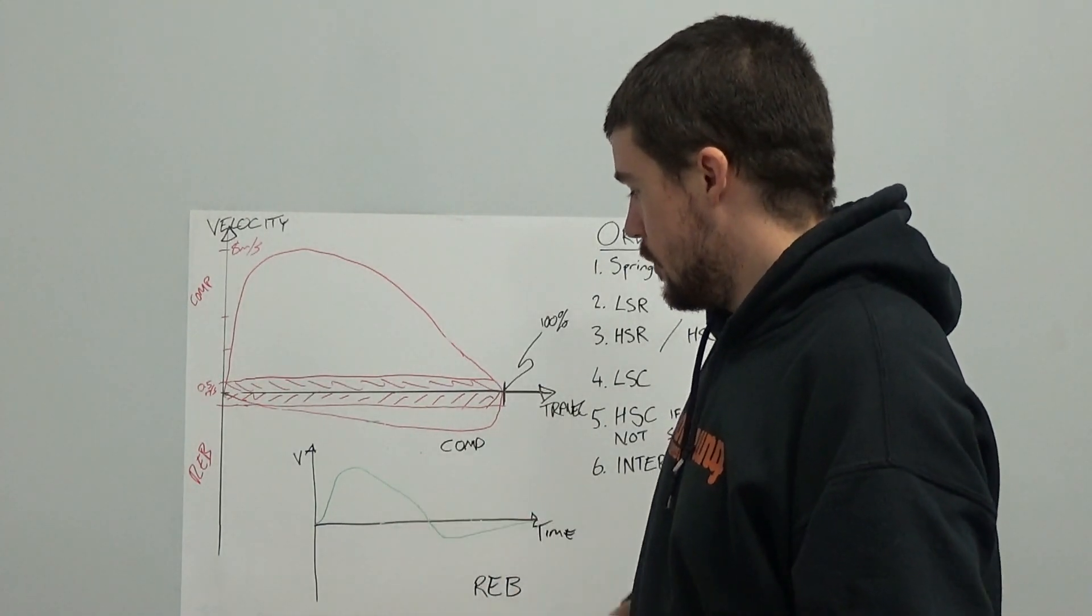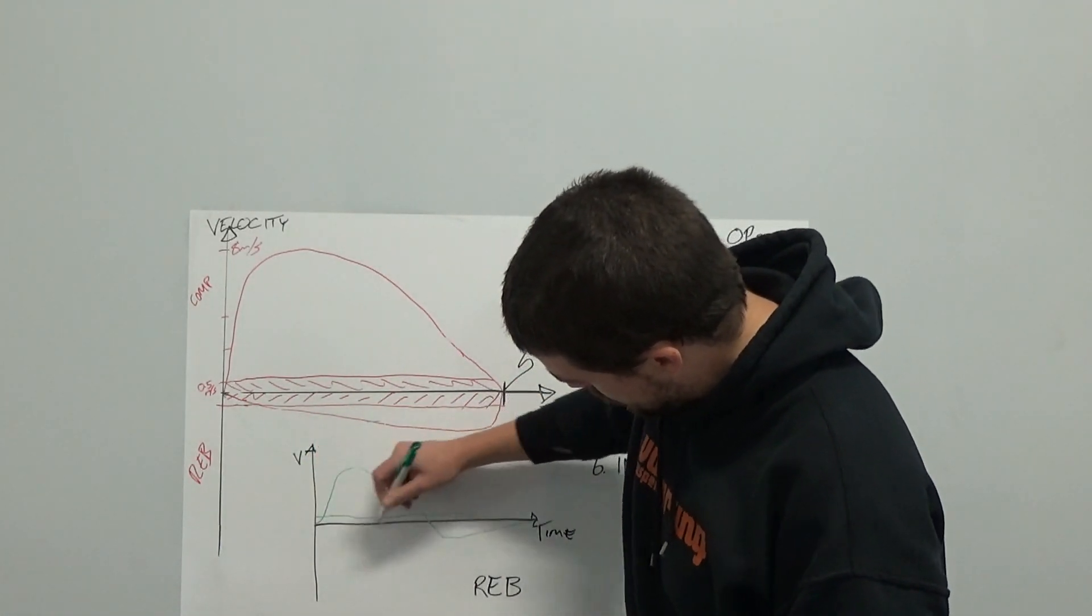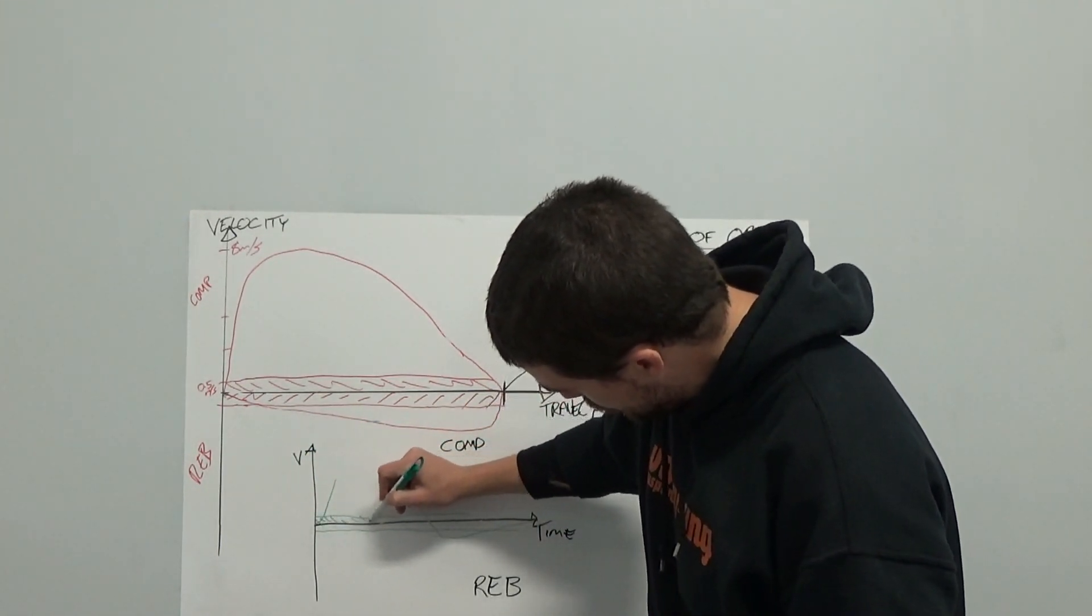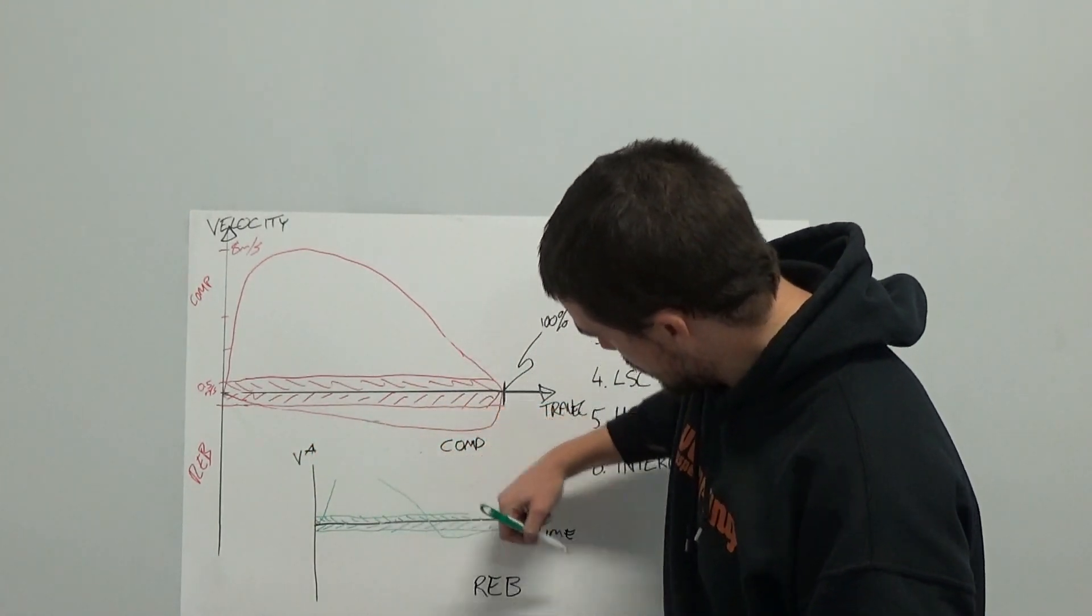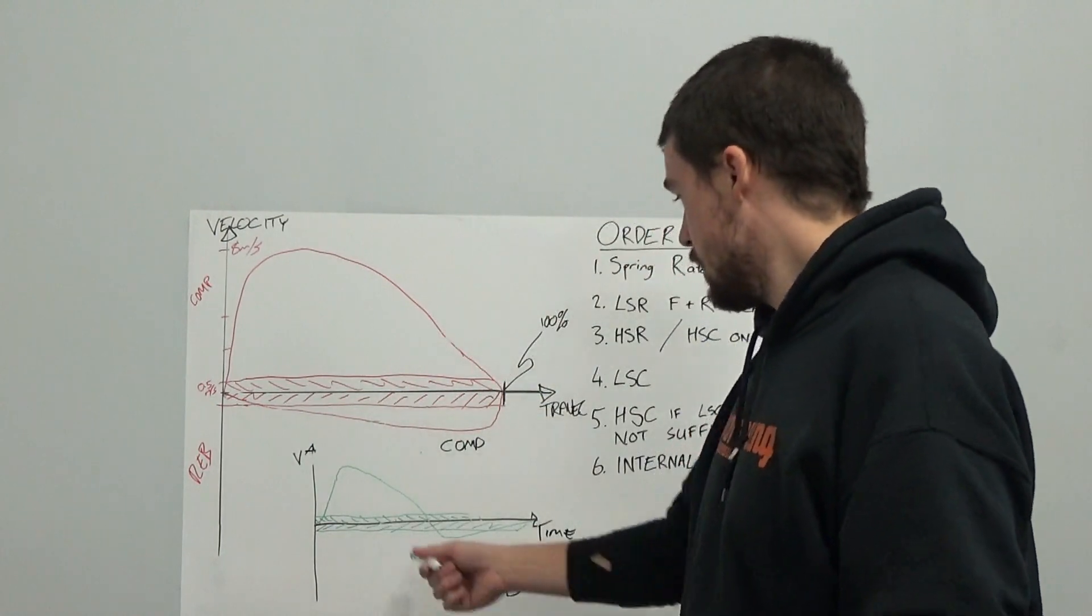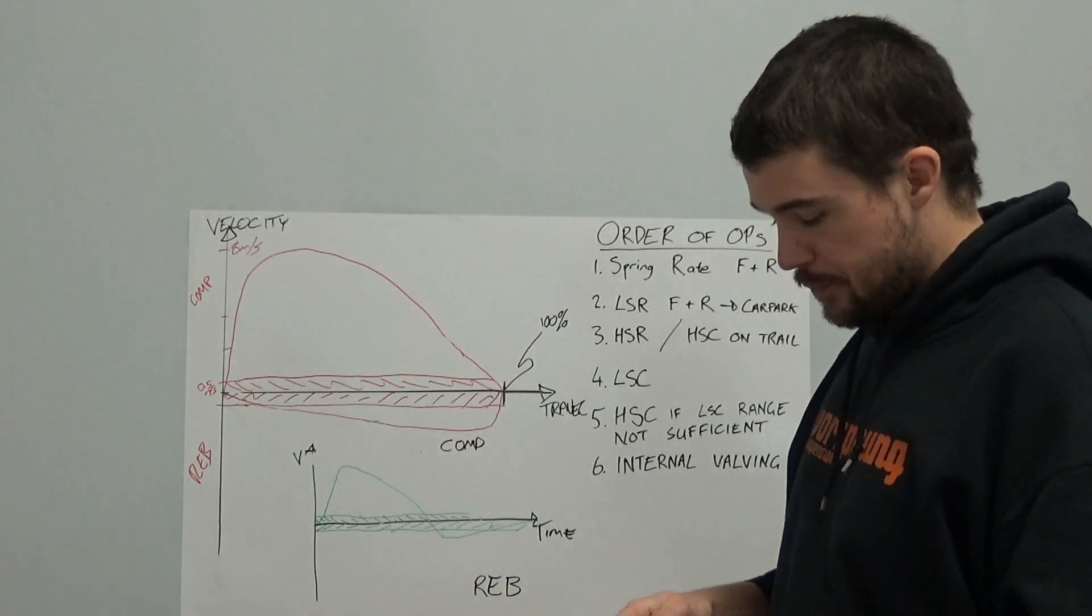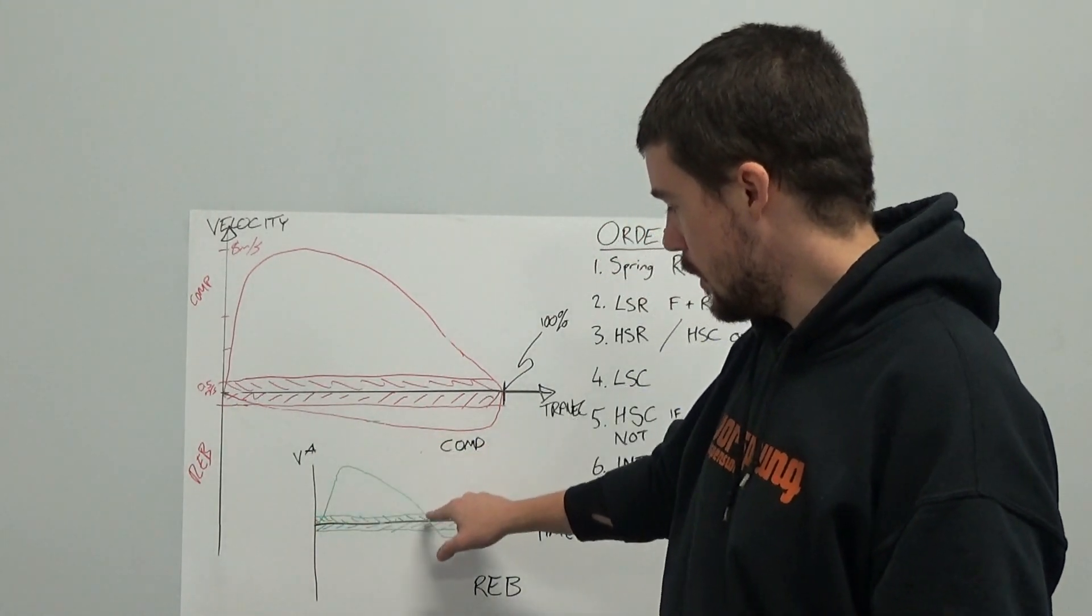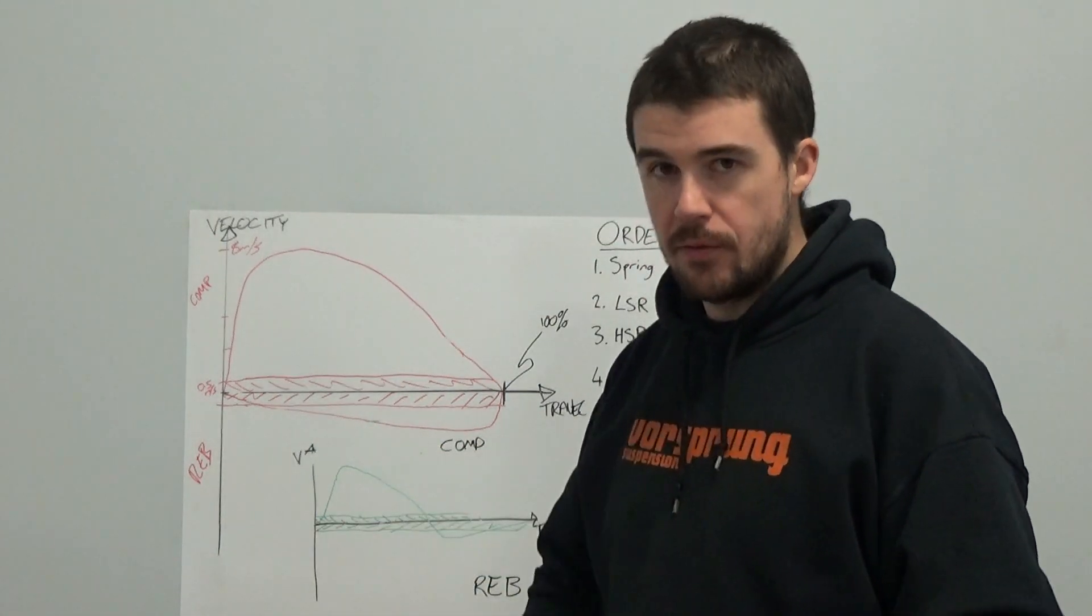So what that shows us there is that if we have a low speed region that is like that somewhere and like that somewhere, so that anywhere in here is affected by your low speed compression damping and anywhere in here is affected by your low speed rebound damping, the amount of time that's in there in compression is obviously a lot less, in rebound it's a lot more. So what we can also see is that at both ends of the compression, so as it starts compressing, as it slows down and as it stops compressing, it passes through the low speed compression.